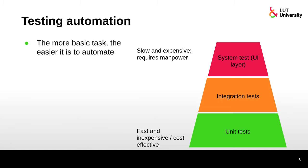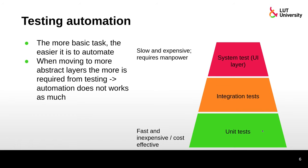Regarding testing automation, the more basic the task, the easier it is to automate. At the unit test level, you can automate quite easily — it's fast and cost-effective. But at the system test level, for example doing user interface testing, it's much more expensive to automate and still requires manpower. The more abstract the layer, the more money you need to invest in that kind of testing automation. There are still some tasks that really cannot be tested with automation at all.